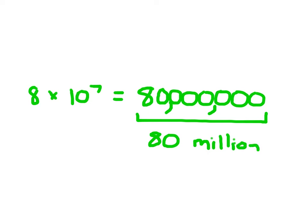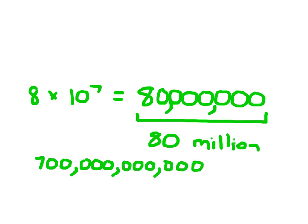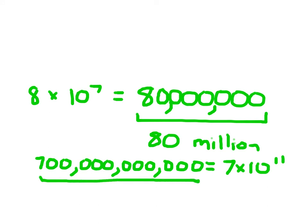Even numbers into the billions — we're able to go ahead and work with those. For instance, when we had 700 billion, which is that 7 followed by that many zeros, we write 7 times 10 and then count up those places: 1, 2, 3, 4, 5, 6, 7, 8, 9, 10, 11. That's 7 times 10 to the eleventh — that there is 700 billion.